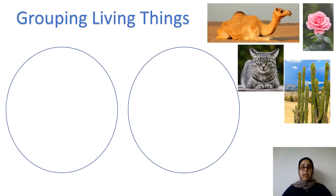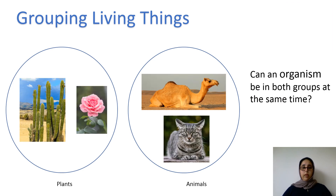So now grouping living things. Take a look at the pictures here. How would you group these living things? Pause the video and draw this in your books. Well done everyone. So how I grouped it is: in the first group I did plants and in the second group I did animals. That way we're showing their differences — even though they are all living things, one group is animals and the other is plants.